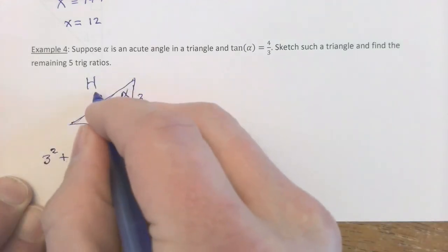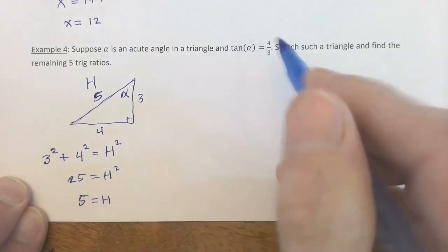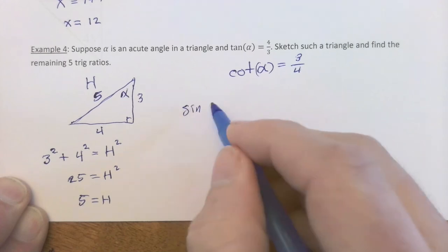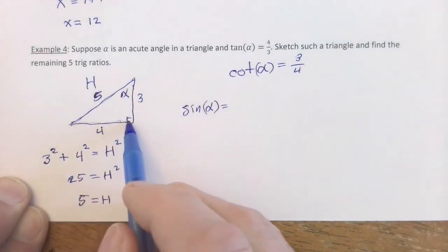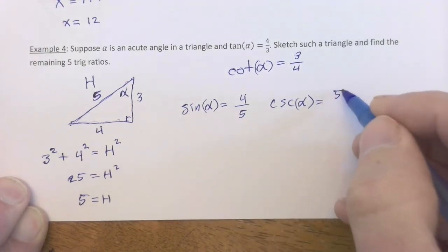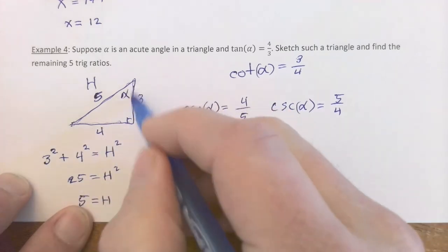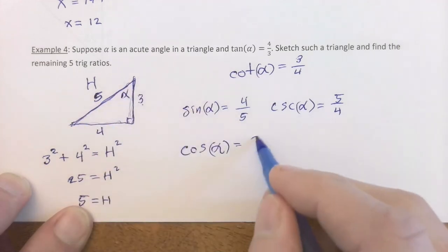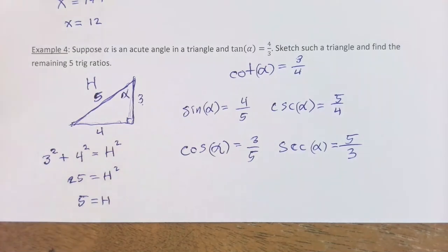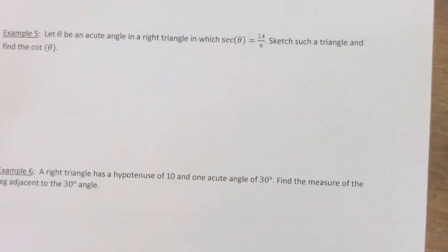With alpha at the top and hypotenuse = 5: cot(α) = 3/4 (reciprocal of tangent). sin(α) = opposite/hypotenuse = 4/5, and csc(α) = 5/4. cos(α) = adjacent/hypotenuse = 3/5, and sec(α) = 5/3. Practice with all six trig ratios is valuable, especially if this is your first introduction to the topic.